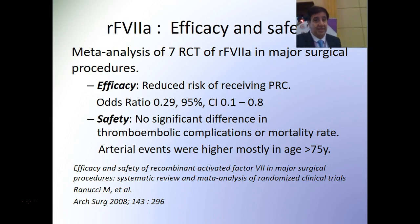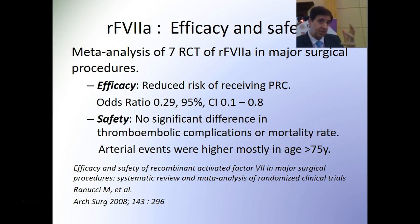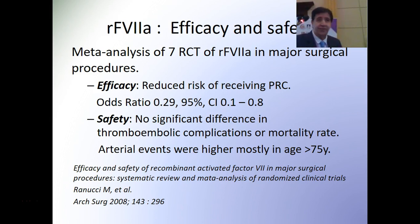A meta-analysis of randomized controlled trials showed that recombinant factor 7a reduced the risk of receiving blood transfusions with an odds ratio of 0.29. For safety, there was no significant difference in thromboembolic complications — because it works only on the surface of platelets, not on tissue factor — and no difference in mortality rate. Its main benefit is decreasing the amount of transfusion required.